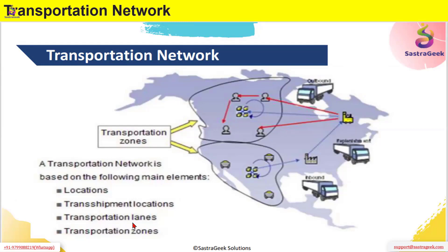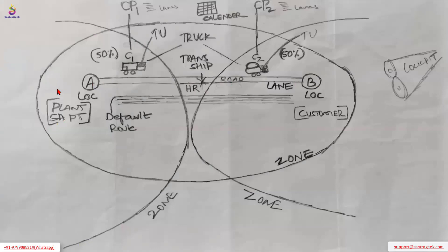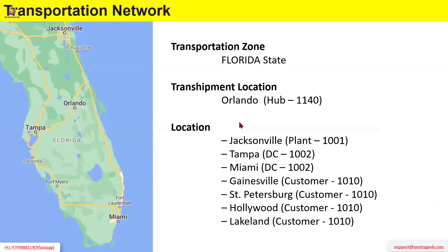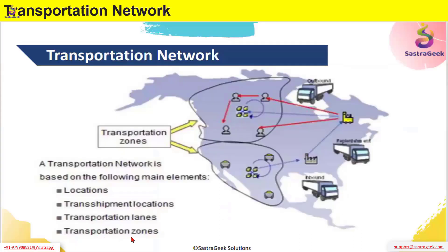Then you have transportation lanes — for example, from plant to customer, that is a transportation lane. And transportation zones, which are logically demarcated areas for better processing of transportation activities. Zones can have various locations within them. Summarizing: a transportation network comprises locations, transshipment locations, transportation lanes, and transportation zones.